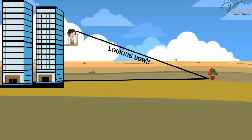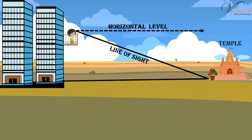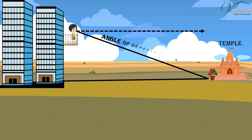In this case, the line of sight is below the horizontal level. The angle so formed by the line of sight with the horizontal is called the angle of depression. Thus, the angle of depression of a point on the object being viewed is the angle formed by the line of sight with the horizontal when the point is below the horizontal level.